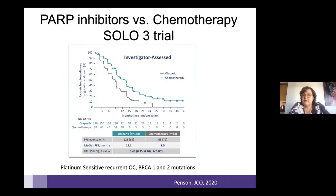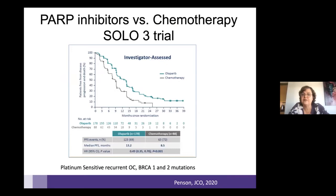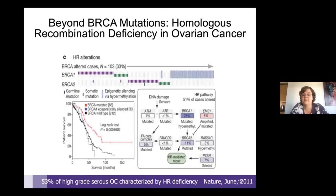Could we use PARP inhibitors instead of chemotherapy? The SOLO-3 study looked at patients with BRCA-mutated recurrent platinum-sensitive cancer, randomizing them to standard chemotherapy versus olaparib. Patients with this targeted treatment for their mutation did better than those treated with standard chemotherapy. This is great news for BRCA-mutated tumors, but BRCA-mutated ovarian cancer represents only 10 to 15 percent of all cases.